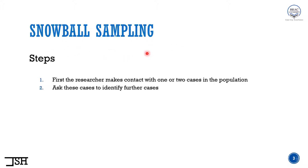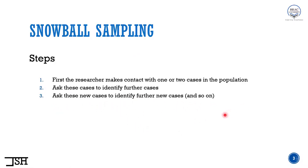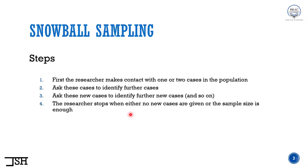Let's say that person gives me two further references. I go to both of them and take their interviews. Then the next step is to ask those new cases to identify further new cases, and so on. Once I'm done taking those two people's interviews, I ask them again to provide further references, and this process goes on and on until the researcher stops — either when no new cases are given or the sample size is enough.